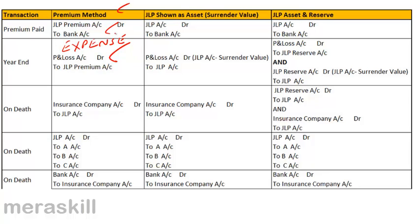On death, the amount received is not the surrender value as in retirement — it is going to be the full policy amount. So: insurance company account debit to joint life policy account. Then joint life policy account debit to partners A, B, and C in the old profit sharing ratio. When money is received: bank account debit to insurance company.